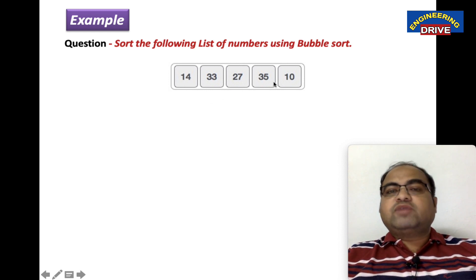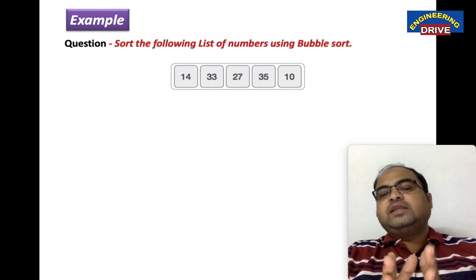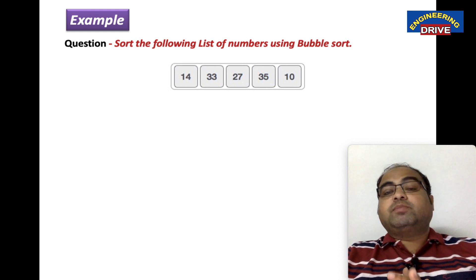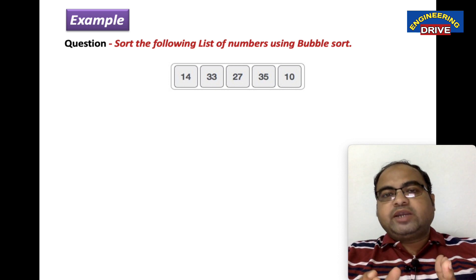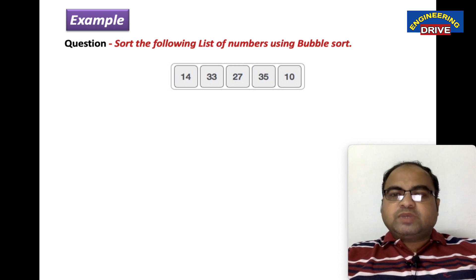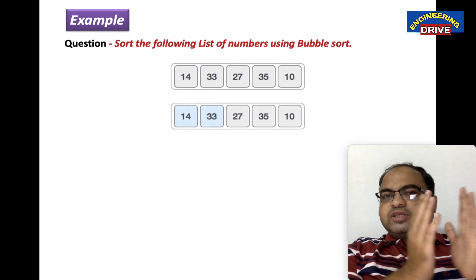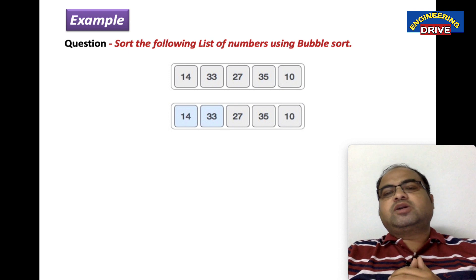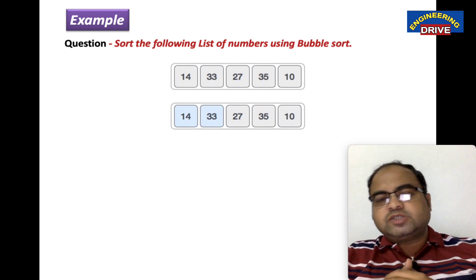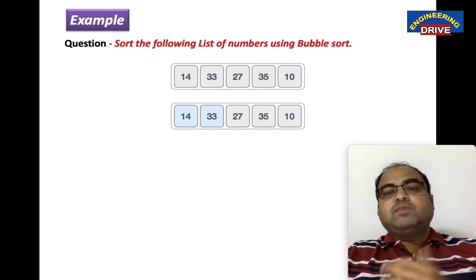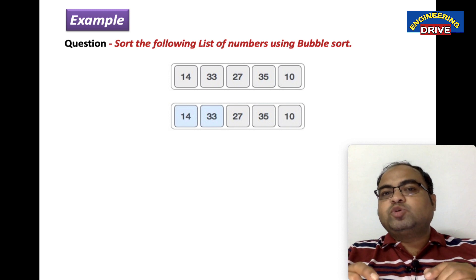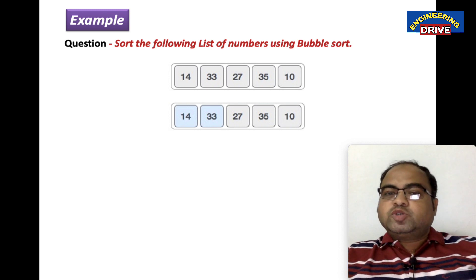I have a set of five numbers, all in unsorted order. I need to convert them into sorted order using bubble sort. In this method I am going to start comparing the first two values. You may say the same method is used in selection sort and insertion sort — then what is the difference in bubble sort? Listen to all the steps and you will come to know the unique feature.